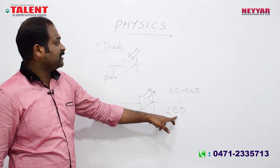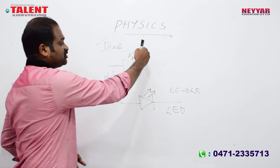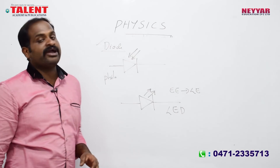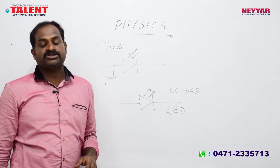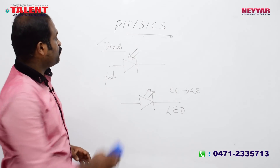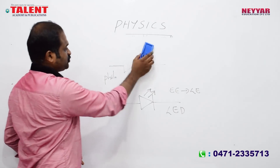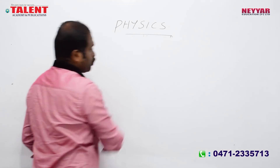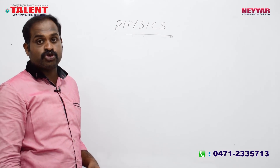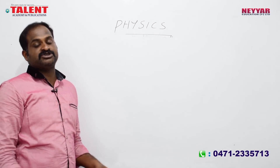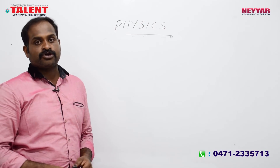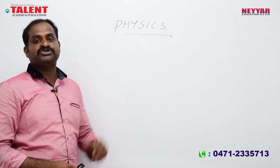Light energy to electrical signals — that is the photodiode. Photo receptors use the photodiode.